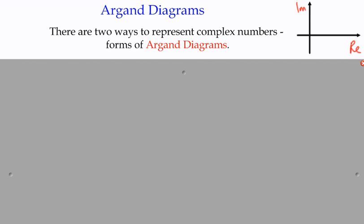There are actually two types of diagrams we can use, two types of graphs. The first would be the Cartesian type, and the other would be what's called polar form. Both of these are types of Argand diagrams. An Argand diagram, as shown on the screen, is simply the name we give to an illustration of a complex number on a diagram.